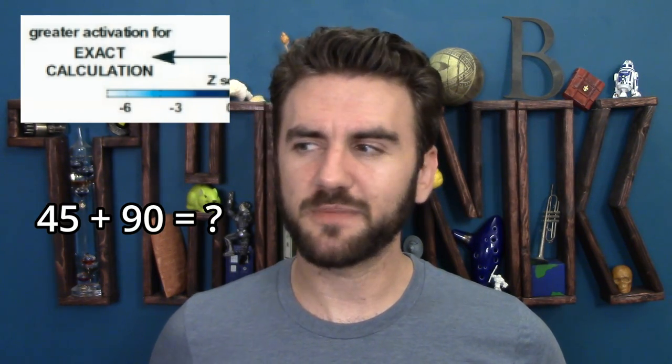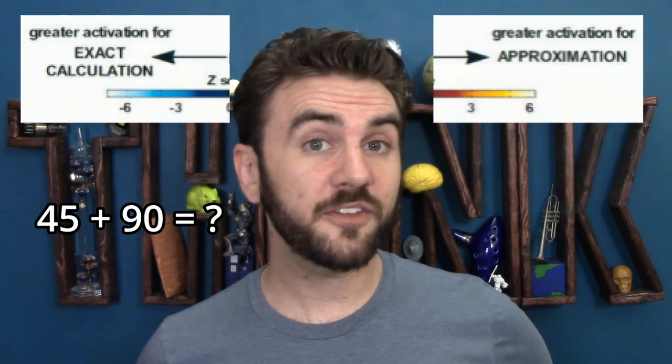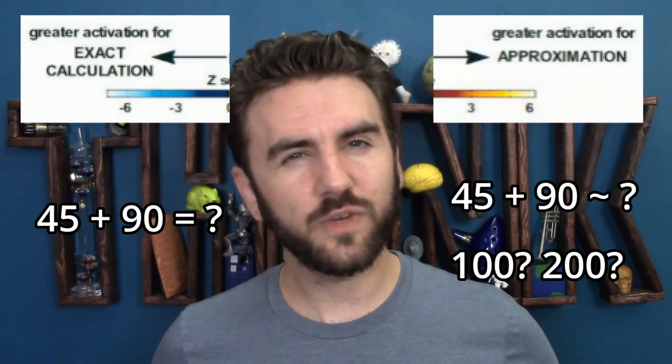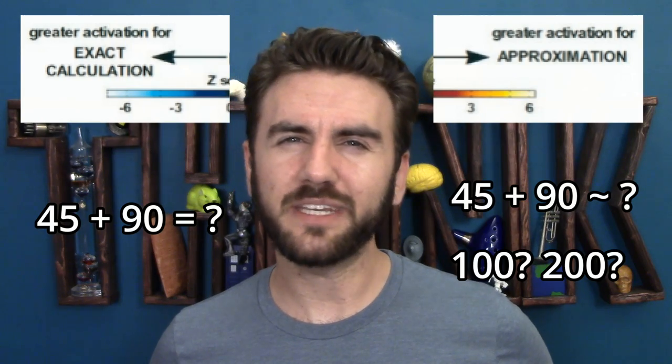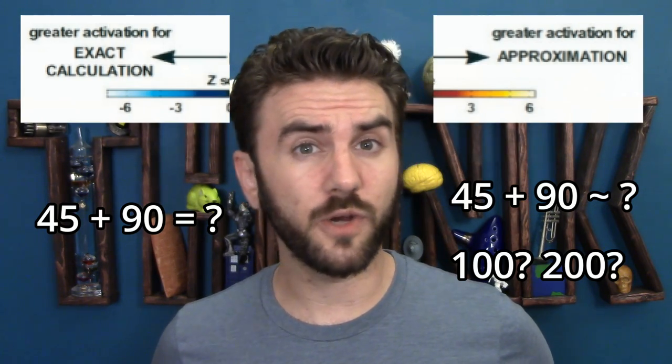And unfortunately, it seems that human brains aren't wired particularly well to do that. In 1999, some neuroscience researchers from Orsay and MIT published a study in which they analyzed the activity of human brains while processing different sorts of questions about numbers. In one scenario, test subjects were asked to report the sum of two two-digit numbers — just add these together in your head. In another scenario, they were asked to estimate which of a set of numbers was closest to the sum.